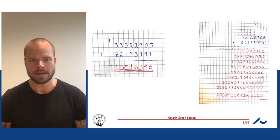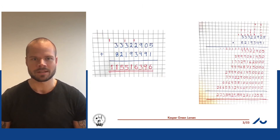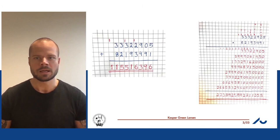I sat down and actually did it. On the left side of the screen you can see my computations when adding the two numbers. I did exactly what you normally learn in elementary school: add the digits from least significant towards most significant and keep a carry as you go along. That doesn't take up too much space on your piece of paper.